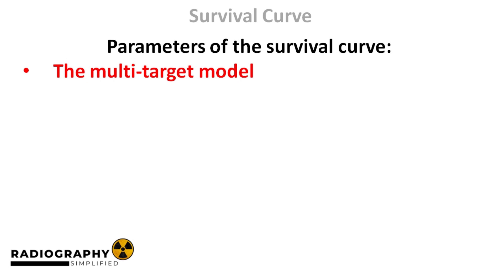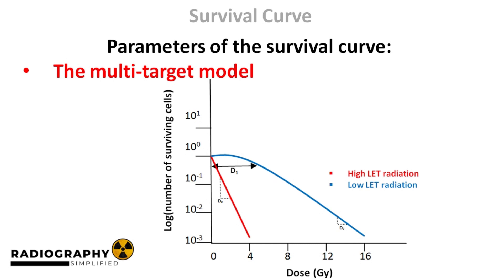Now we'll close off this section by discussing some parameters that can be obtained from the survival curve. Before we go into the explicit discussions, note that the discovery of the survival curve is the result of scientific research, and research is continuous — something discovered today could be improved upon years later. Over the years, different scientific models have been used to describe cell survival to radiation. We'll base our discussion on a model that applies greatly to human cells: the multi-target model. It was the popular model for many years, operating with the assumption that there are multiple targets in a cell that must be struck by radiation for cell death to occur.